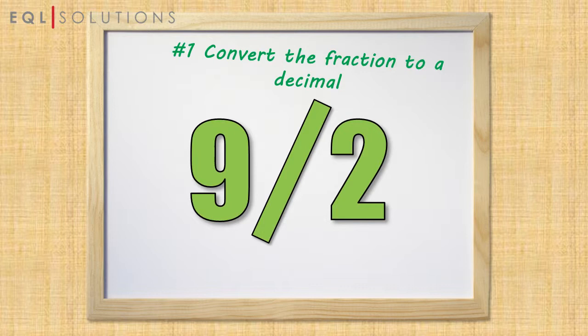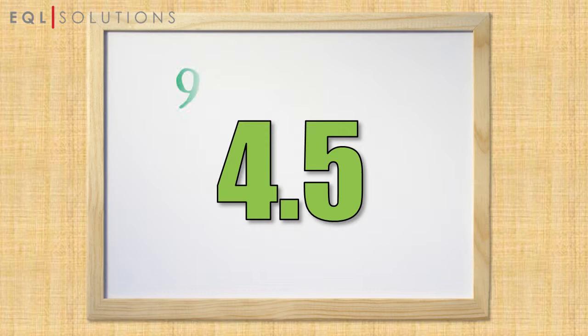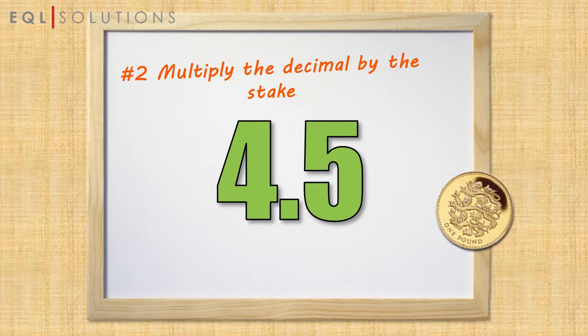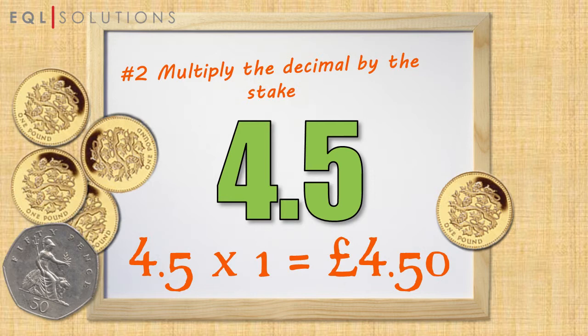If the odds are 9 to 2, then the decimal is 4.5, because 9 divided by 2 is 4 and a half. Next, you multiply that decimal by the stake that they've bet. If they bet one pound, then 4.5 times 1 is 4 pound 50. So they win 4 pound 50, and they get their original one pound stake back too.